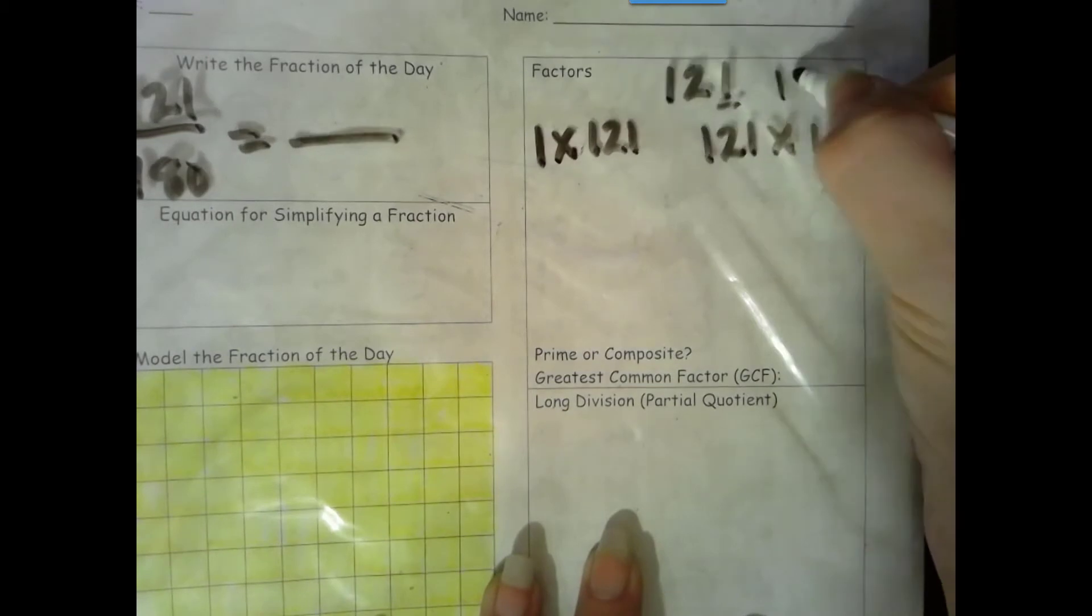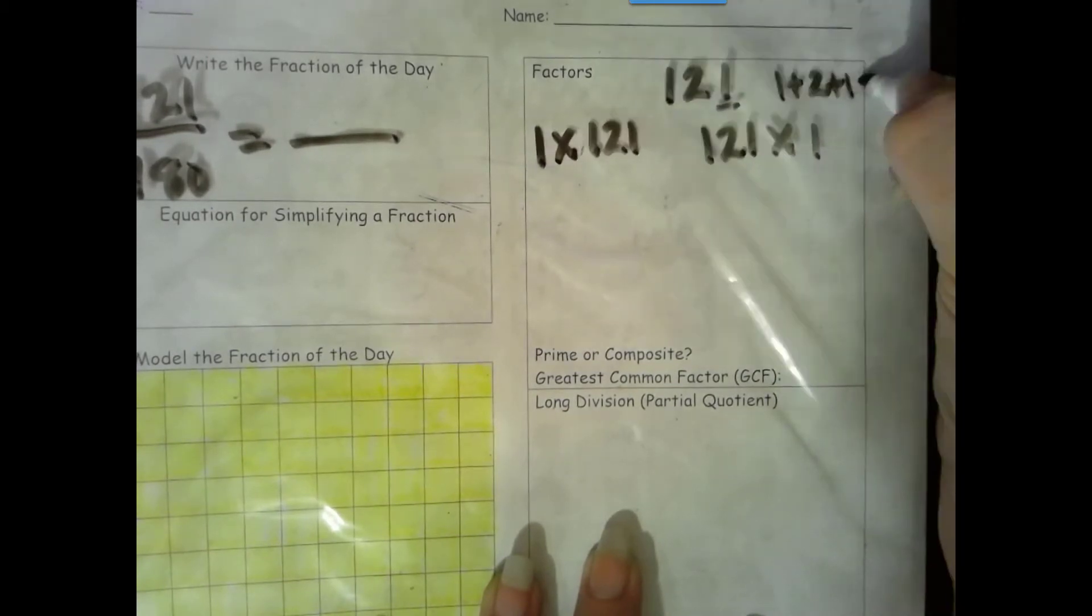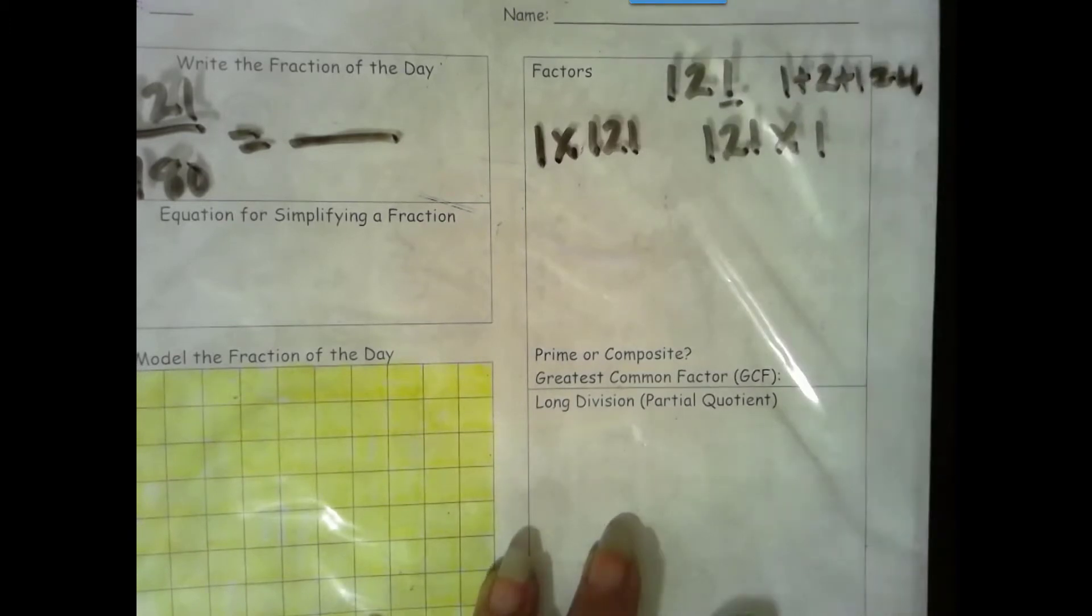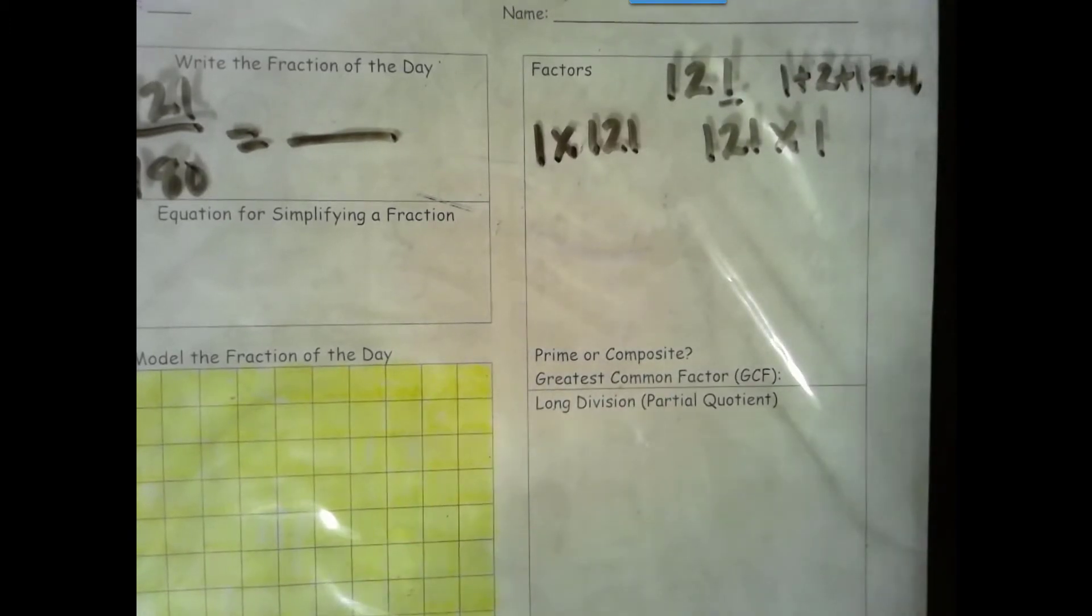The rule for 3 is that we add the digits together. 1 plus 2 plus 1 is 4. 4 is not a multiple of 3, so 3 is not a factor. We try 5. The rule for 5 is that it ends in a 0 or 5. It ends in a 1, so 5 is not a factor.